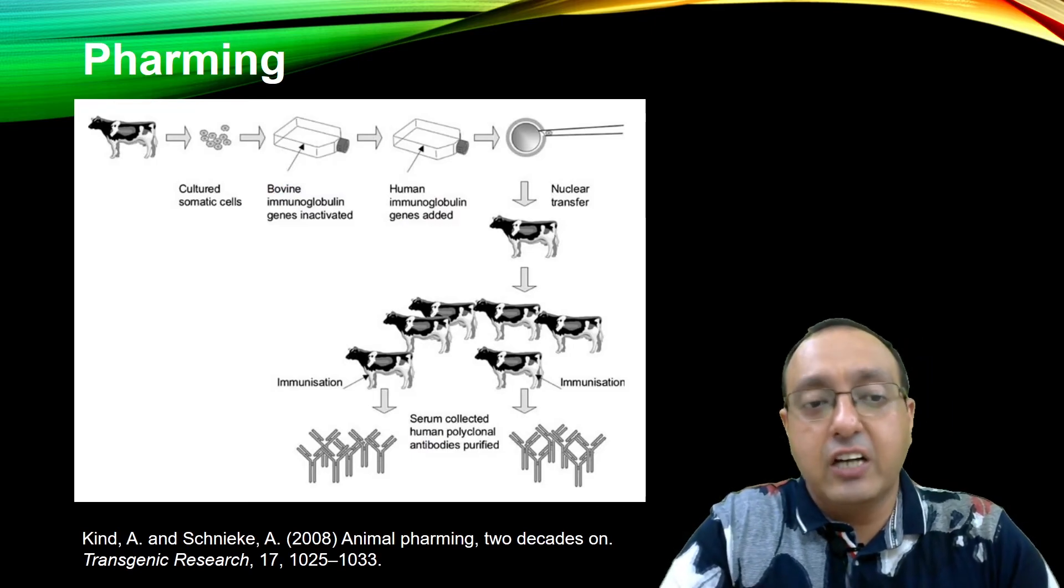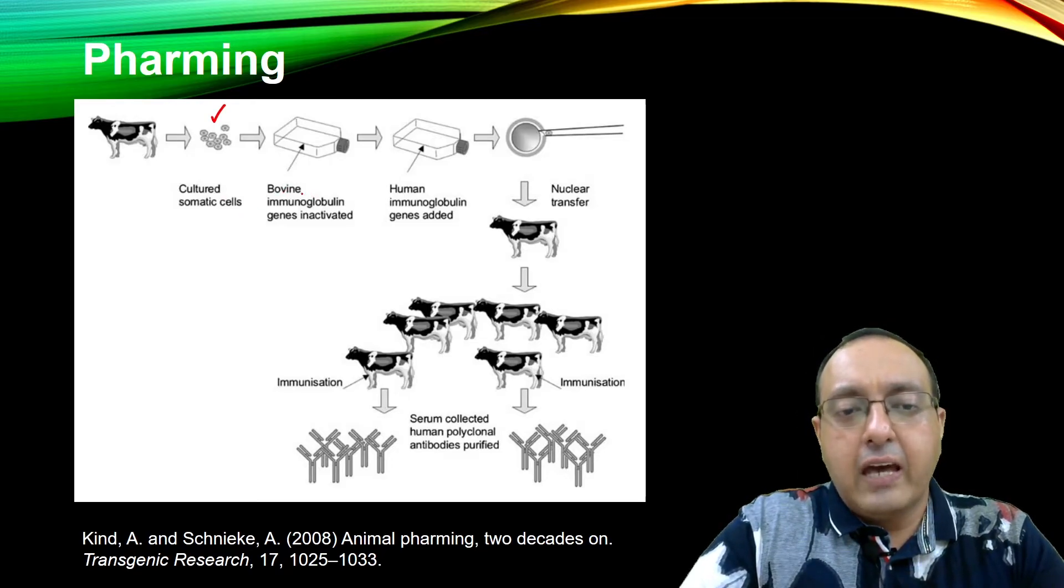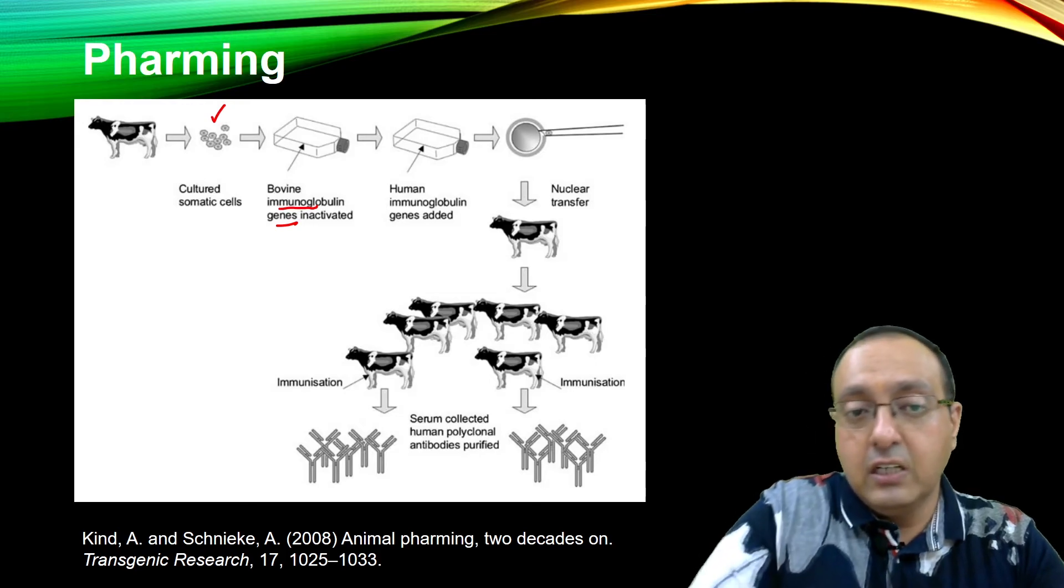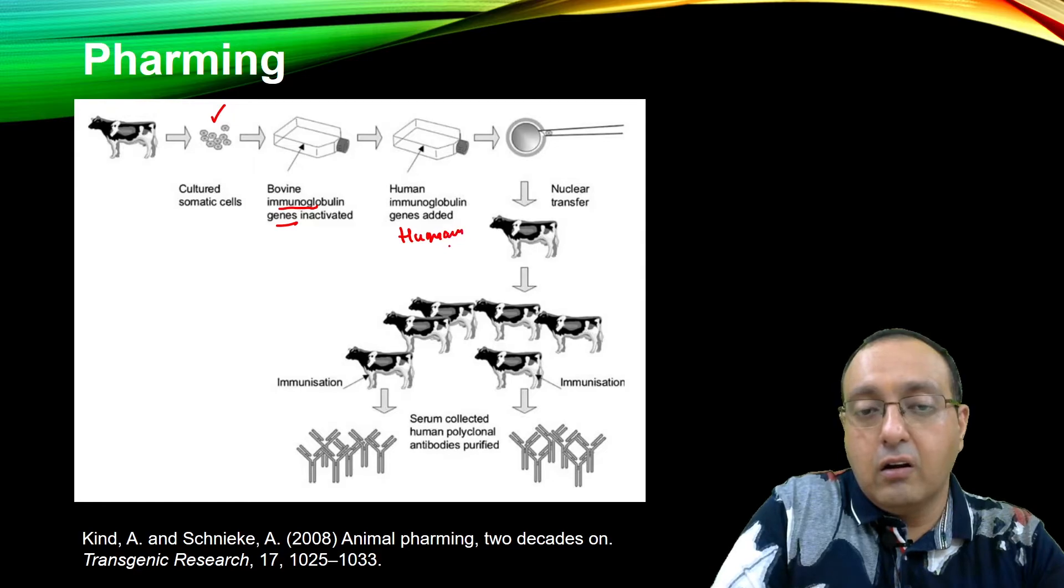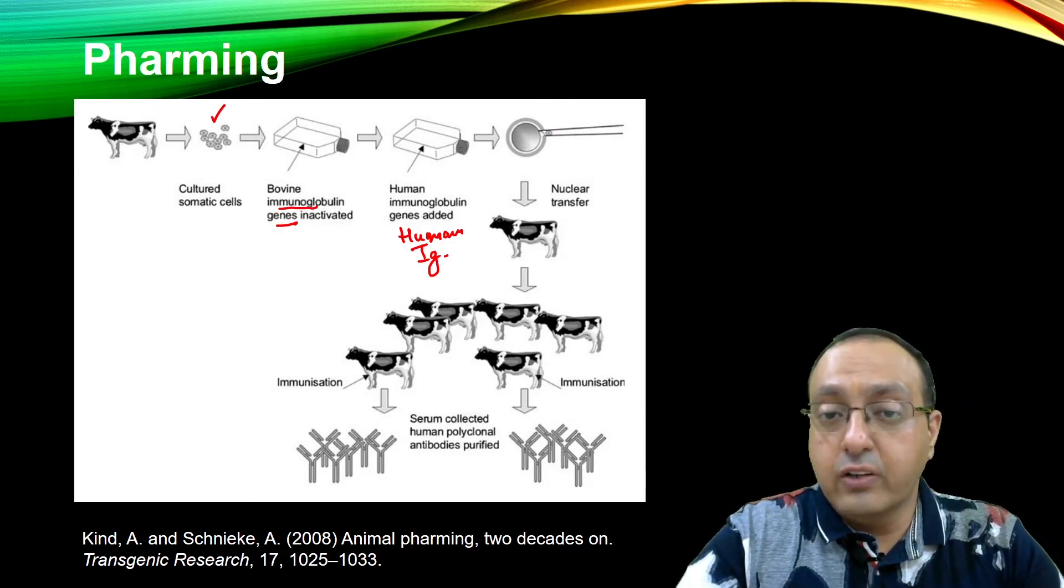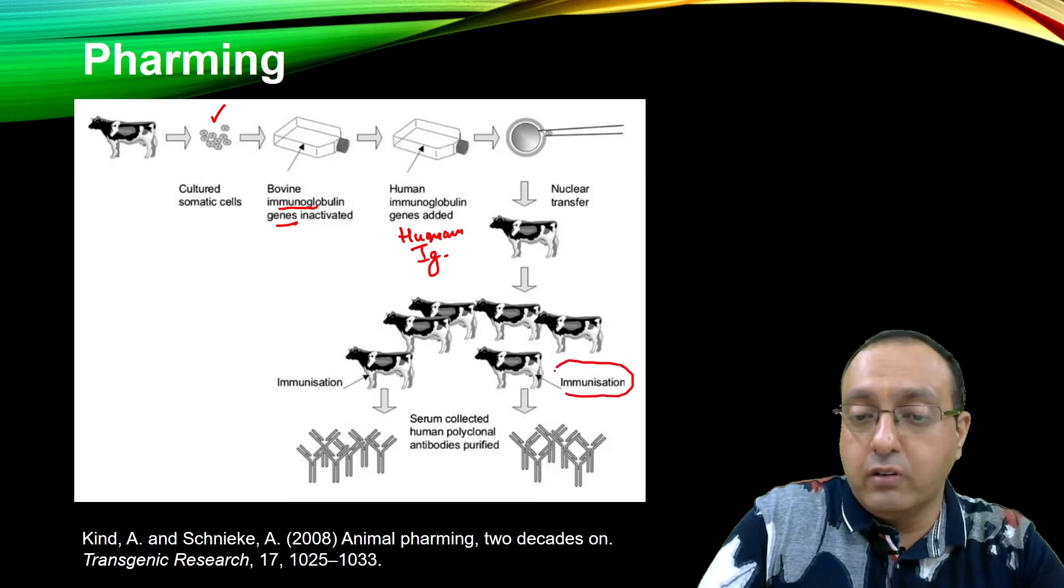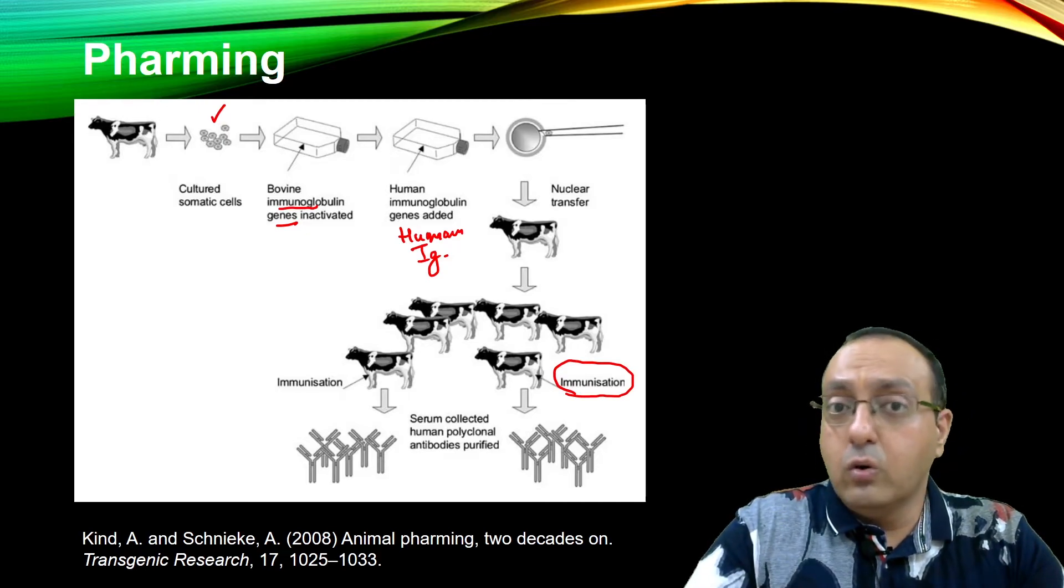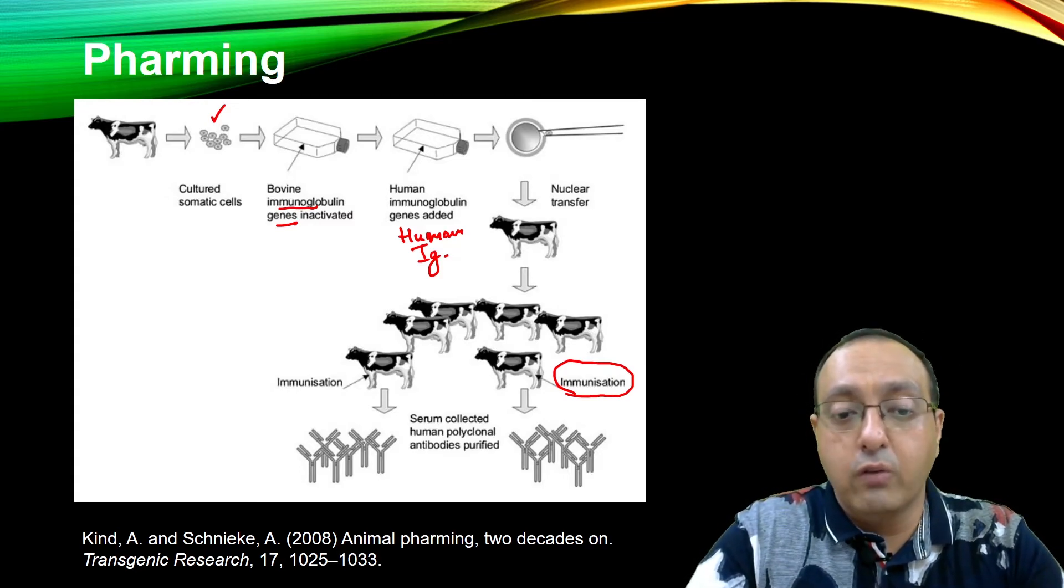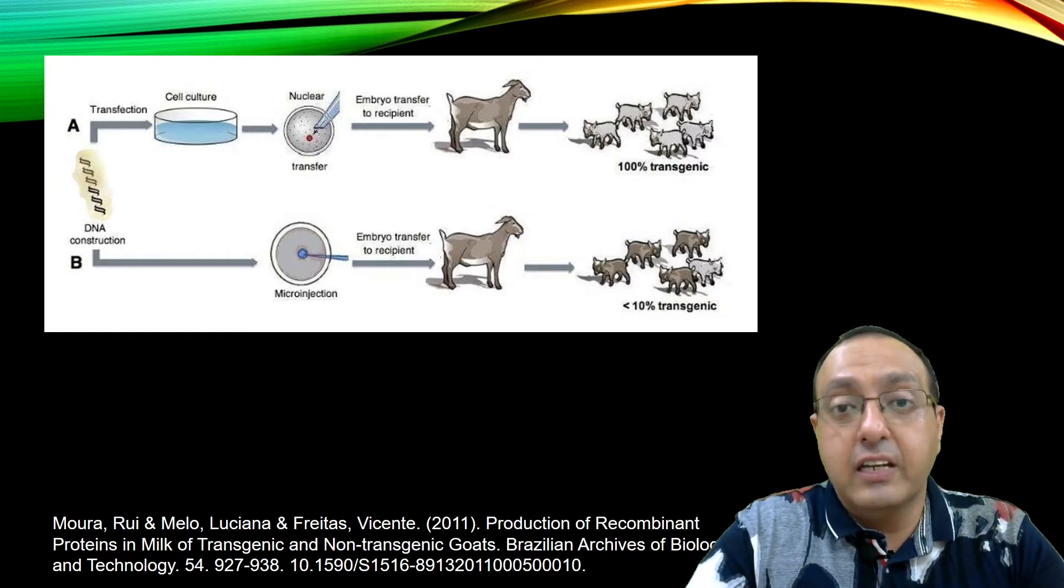So here is this system in a nutshell. We cultured somatic cells from the livestock from cows, for example, we can inactivate immunoglobulin genes, which are of the cow, and we can introduce human immunoglobulin genes. So these will have human immunoglobulin genes in them. Using nuclear transfer, we can create transgenic cows or buffalos in this example. And then if we immunize it with any protein of interest that we want to raise our antibodies against, it will produce recombinant antibodies, which are human in nature from in their serum. Very easy to use. You can purify them very easily.